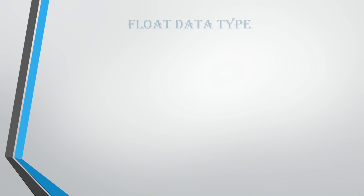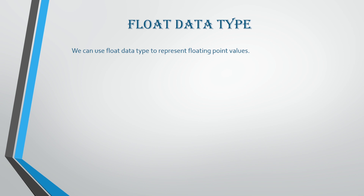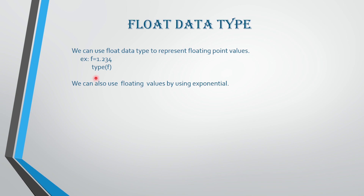In today's video, we are going to see about the float data type. We can use this float type to represent the floating point values, or you can also say the decimal values. For example, if you have f equals to 1.234 and you use type(f), it is going to display the type. The answer for type(f) will be given as float. We can also use floating values by using exponential.